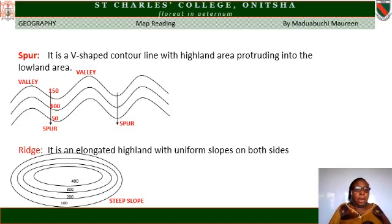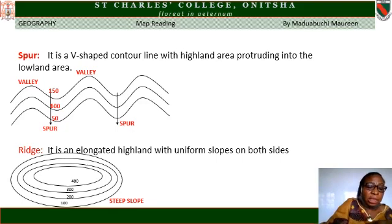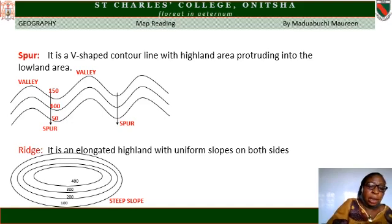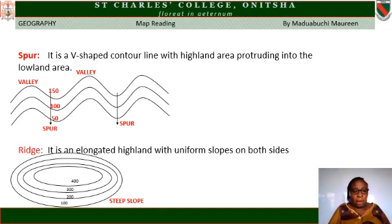Spur. A spur is a V-shaped contour line with highland areas protruding into lowland areas. From the diagram, the area marked with an arrow shows 150 pointing into 100 and 100 pointing into 50 — so that place is a spur. After a valley you have a spur, and after a spur you have a valley. Both are V-shaped contour lines, but you look at the height to differentiate between the two.